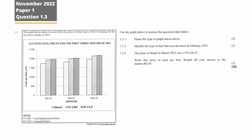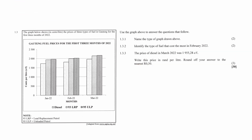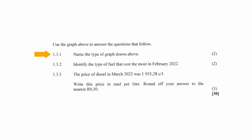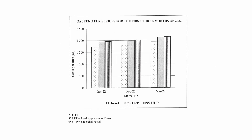Question 1.3 consists of two data handling questions and one finance question designed to assess your understanding of compound bar graphs. You are given a compound bar graph that shows the price in cents per litre of three types of fuel in Gauteng for the first three months of 2022. In question 1.3.1, the type of graph drawn is a compound bar graph.